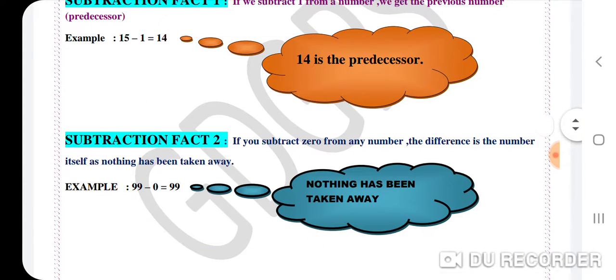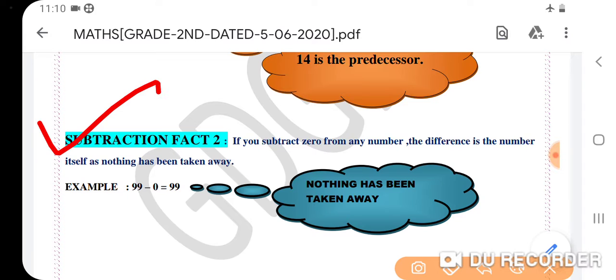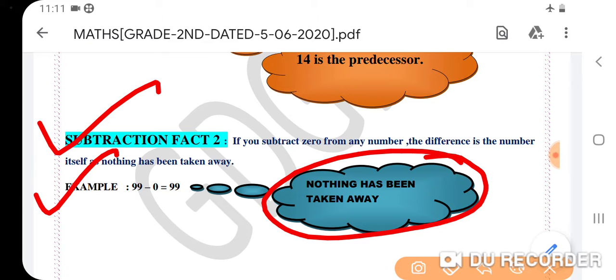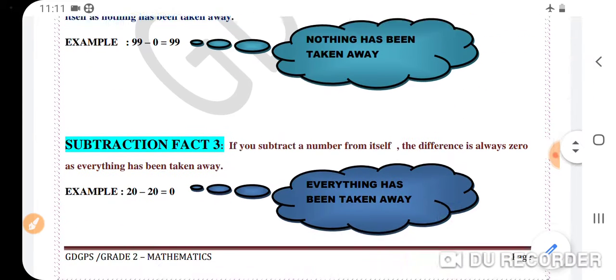Now see the second fact of subtraction. If you subtract 0 from any number, the difference is the number itself as nothing has been taken away. For example, 99 minus 0 equals 99 because nothing has been taken away.